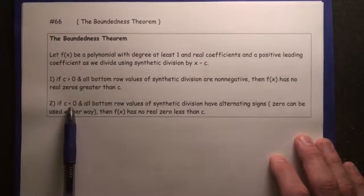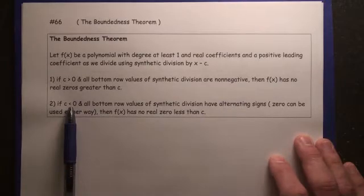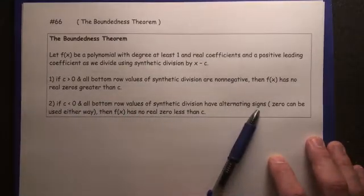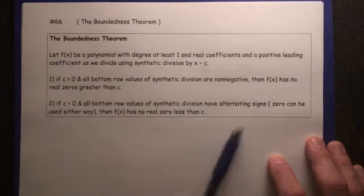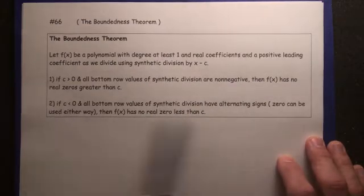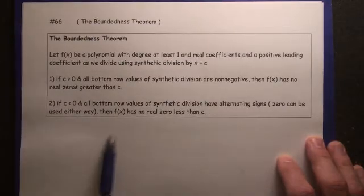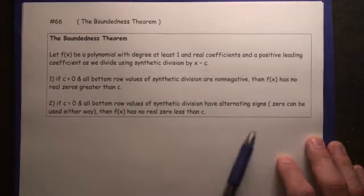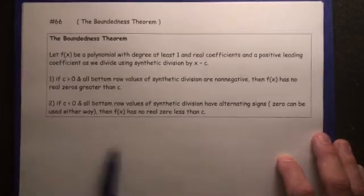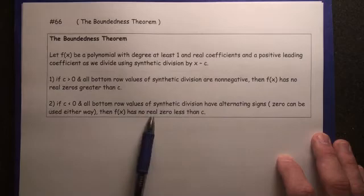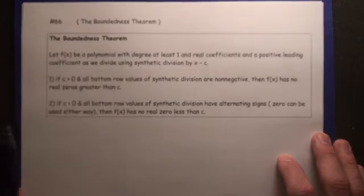Likewise, if we put a negative number inside the synthetic dividing box, and all the bottom rows of synthetic division are alternating signs between positive and negative, then, well not obviously, but we use 0 either way, so it could be positive, negative, 0, negative, positive, you know, so you're going to alternate between positive and negative, but 0 can be used either way. Then f(x) has no real zeros less than c.